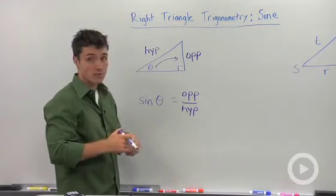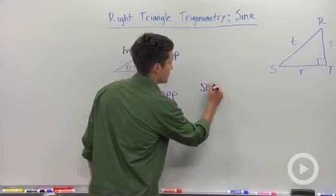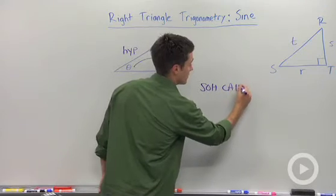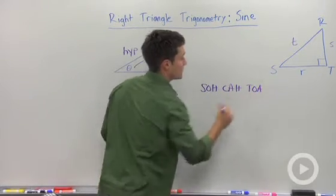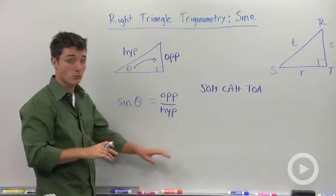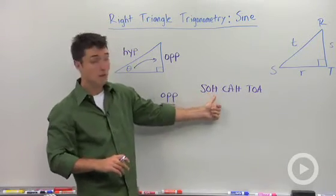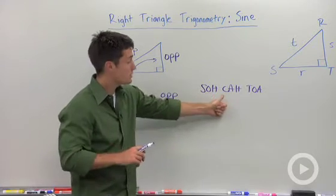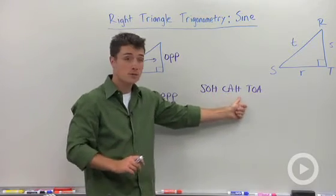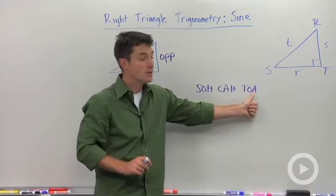Now, a way that you can remember this is using SOHCAHTOA. And since we're just talking about sine right now, you can remember sine because sine is the ratio of opposite to hypotenuse. Cosine is the ratio of adjacent to hypotenuse, and tangent is the ratio of opposite to adjacent.